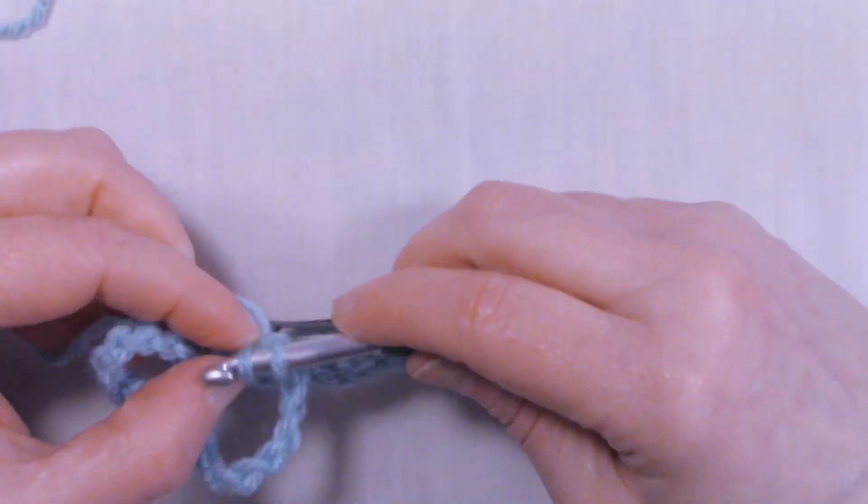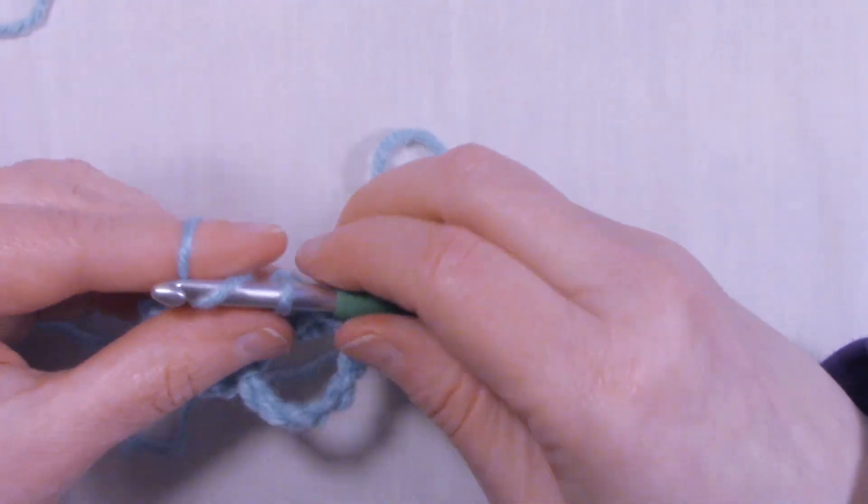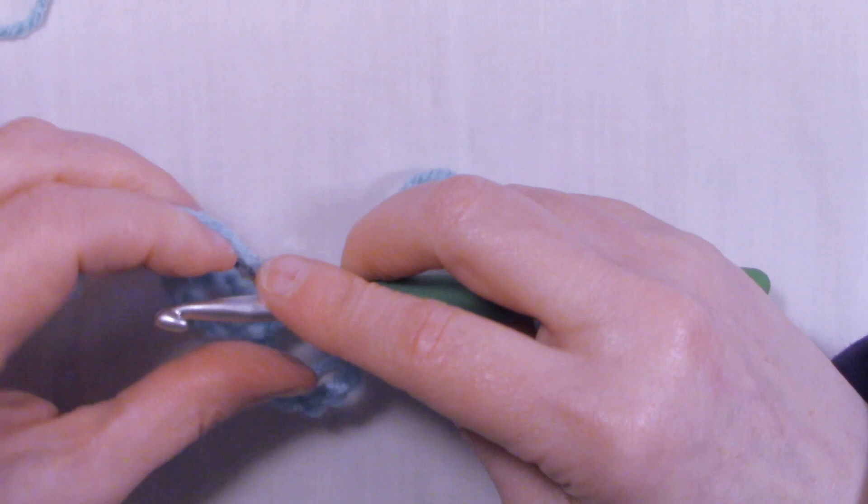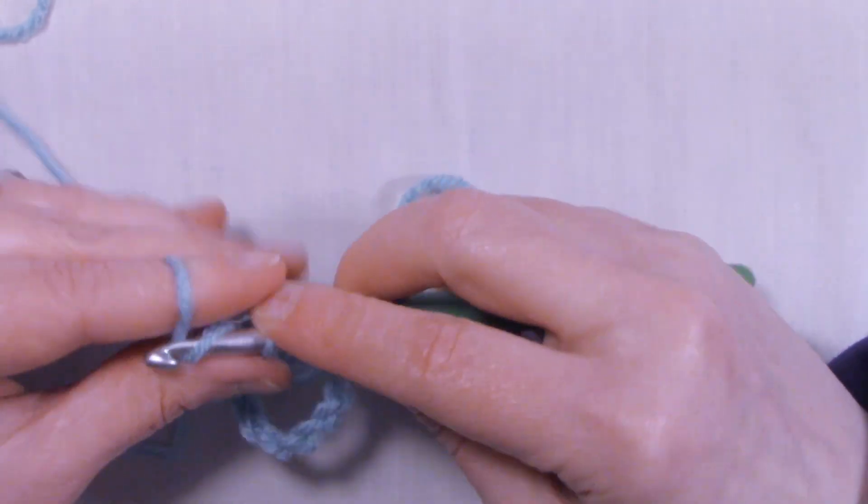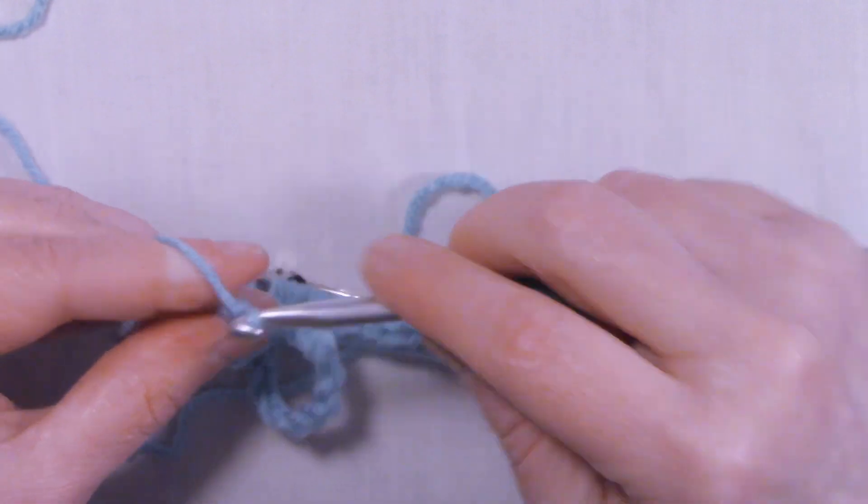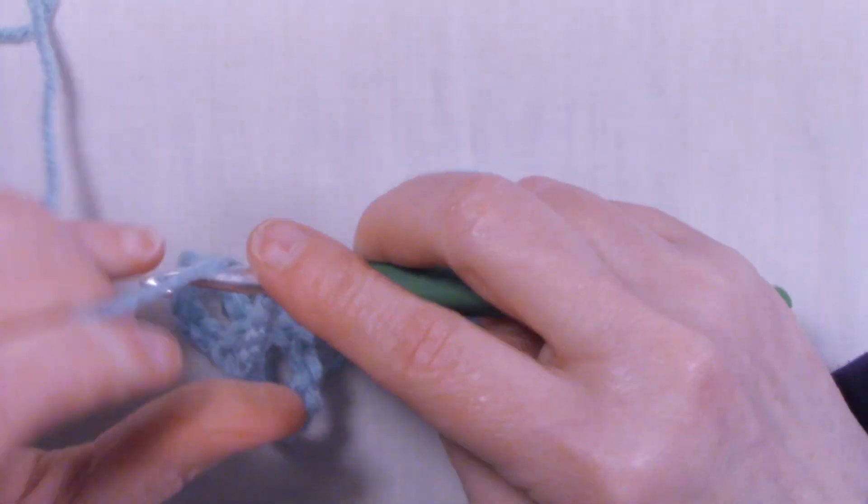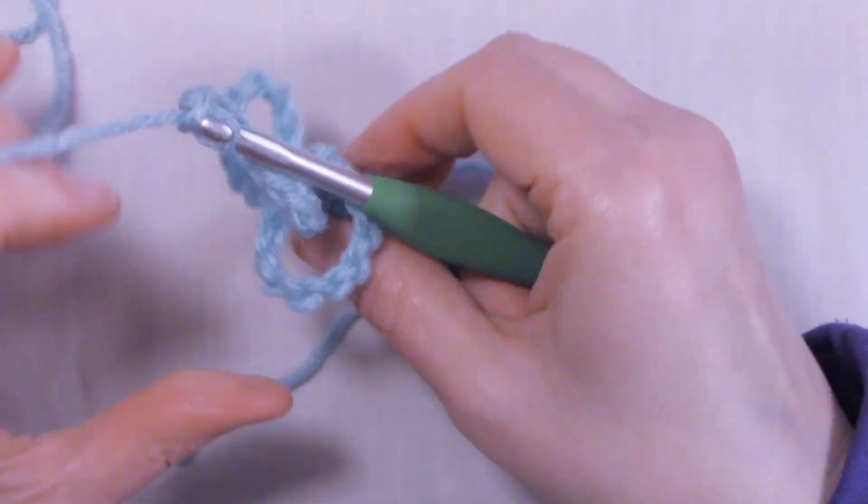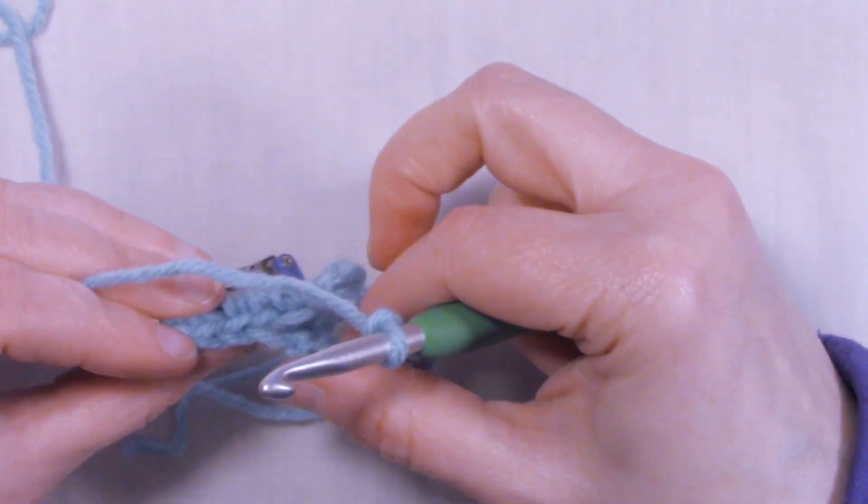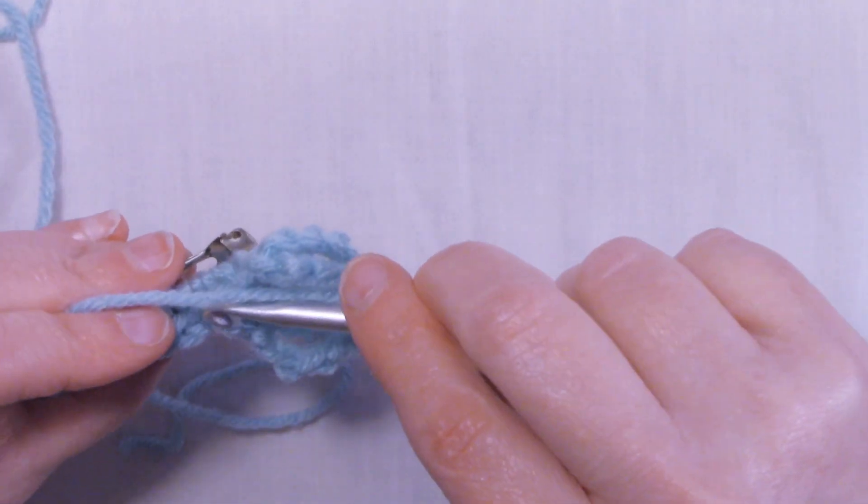Then we're going to slip stitch into the front loop of the next stitch. You might have to turn your work around back and forth while doing this. Then chain 10 again.